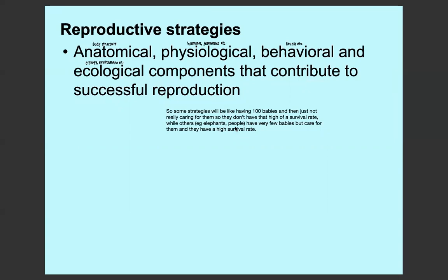So there's a whole lot of different strategies, like low parental care but having more babies, or higher parental care but fewer babies. That would be like elephants and people, whereas more babies and low parental care would be something like insects or fish.